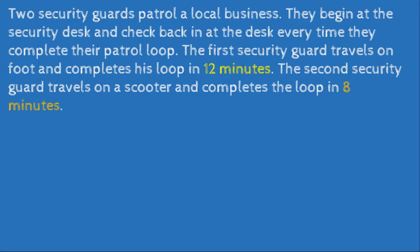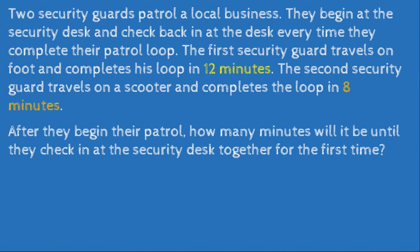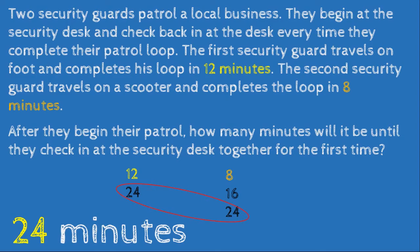Next word problem: Two security guards patrol a local business. They begin at the security desk and check back in each time they complete their patrol loop. The first guard completes the loop in 12 minutes; the second, on a scooter, completes it in 8 minutes. How many minutes until they check in together for the first time? Multiples of 12: 12, 24. Multiples of 8: 8, 16, 24. The least common multiple is 24 minutes.